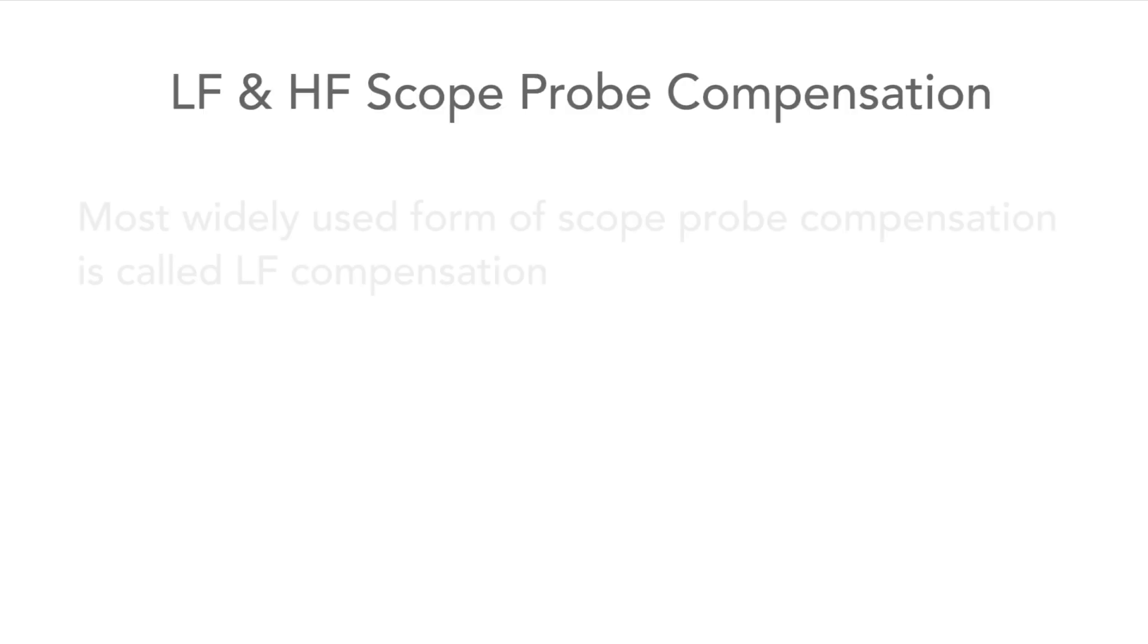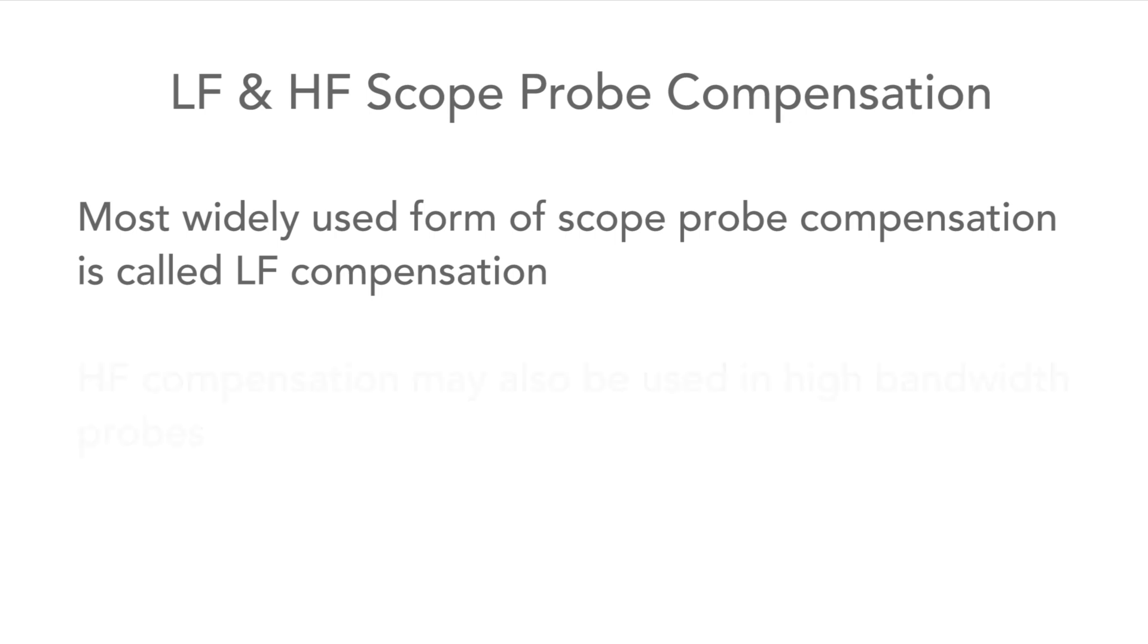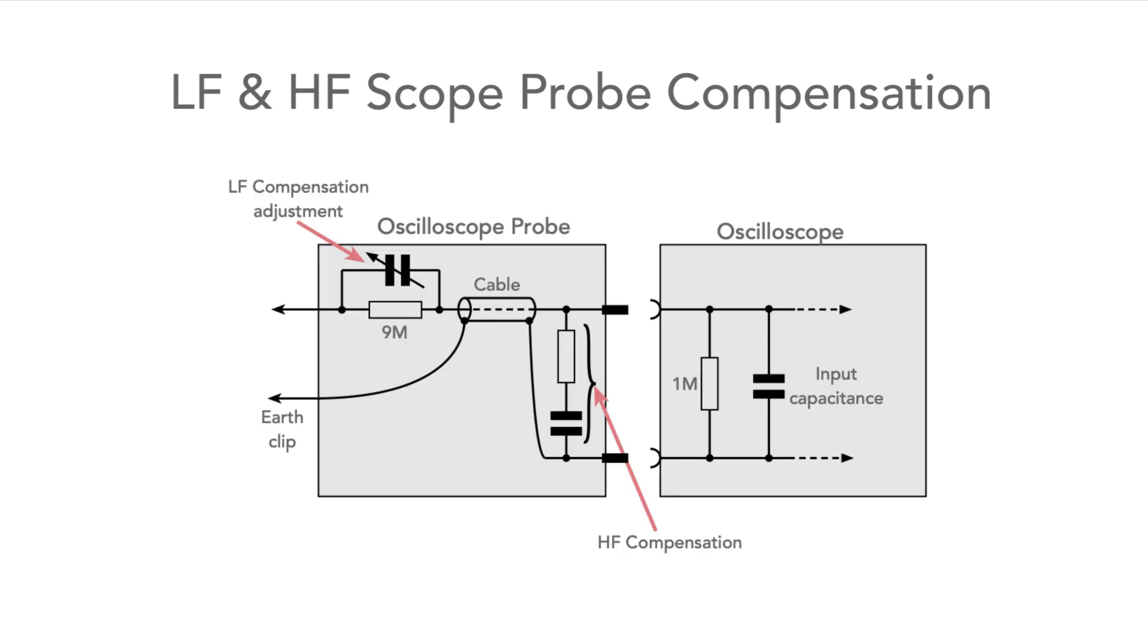This form of compensation is often referred to as LF compensation. In high bandwidth probes, compensation is added for HF signals to give the required bandwidth. This is normally adjusted during manufacture and so there are no user adjustments for this.